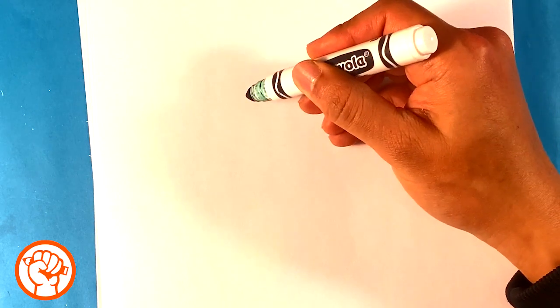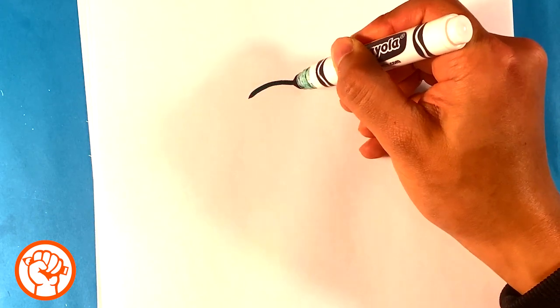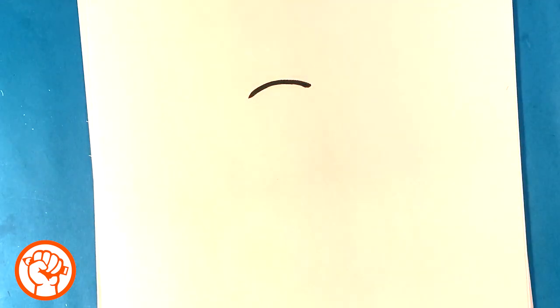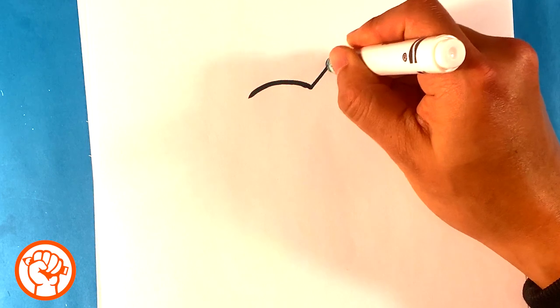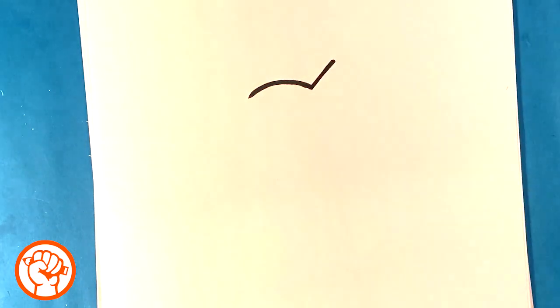Let's get started. First thing I do is I'm going to throw a curved line over here for the top of the head, and a line out over here for part of the mohawk.